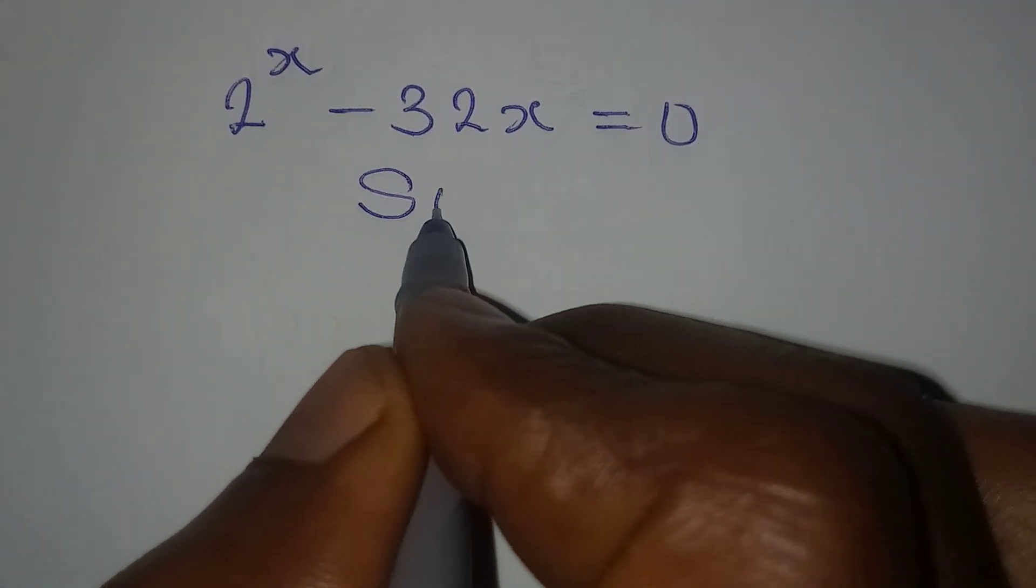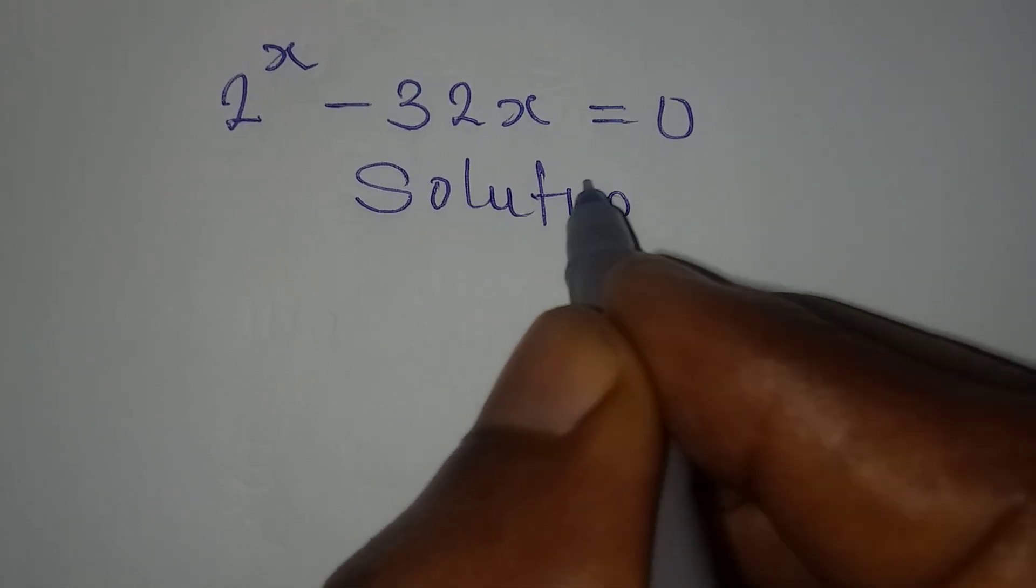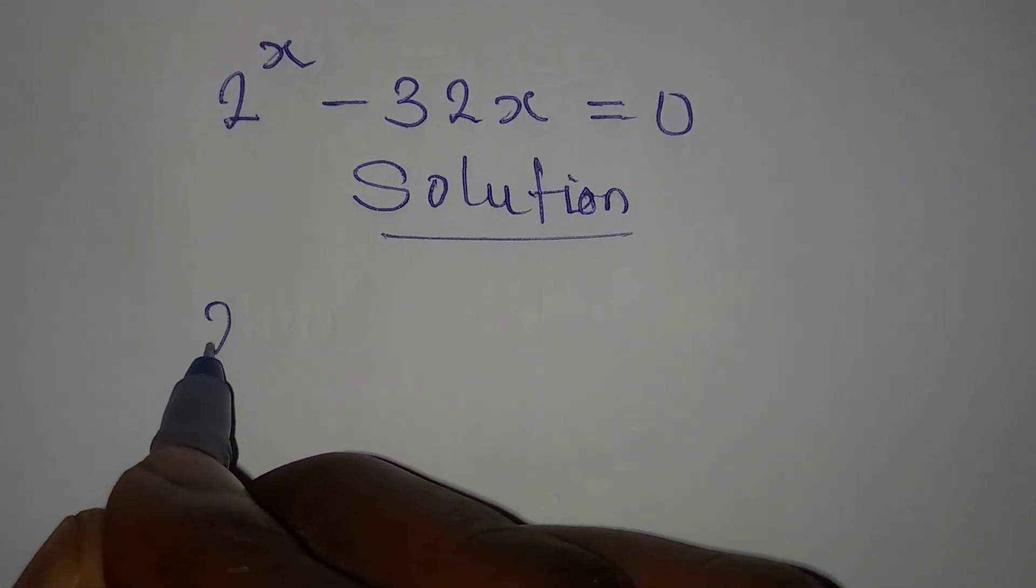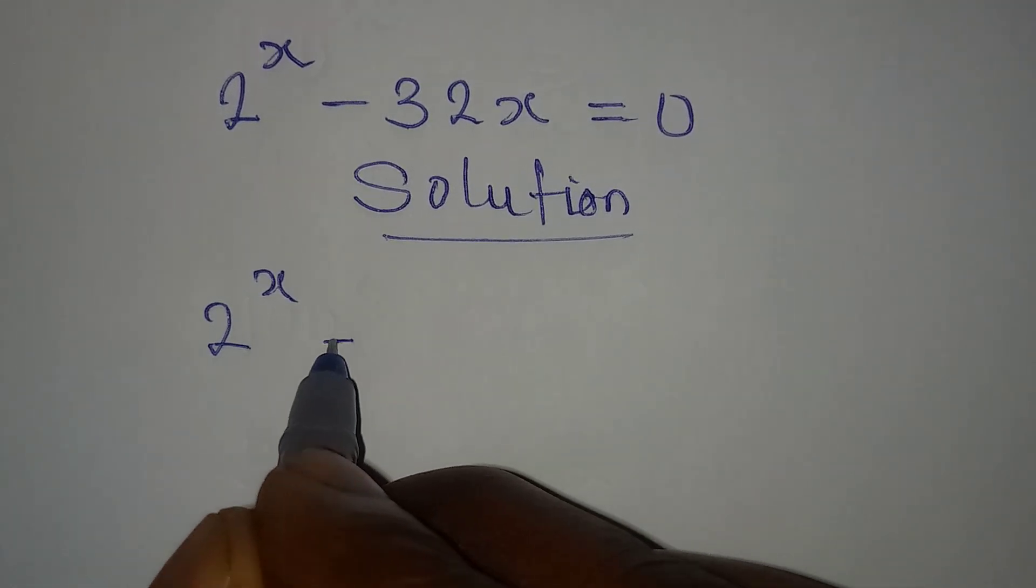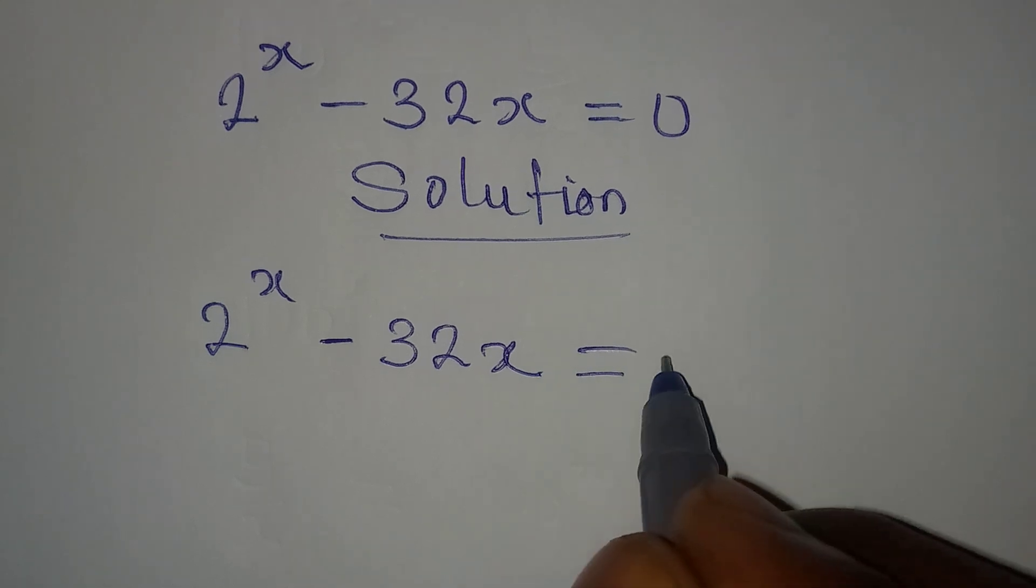Hello everyone, here we have another beautiful Olympiad mathematics problem: 2 to the power of x minus 32x equal to 0.